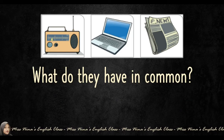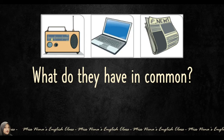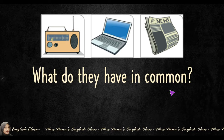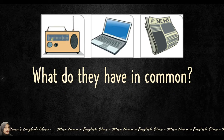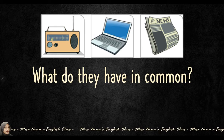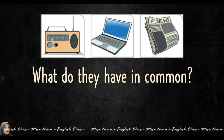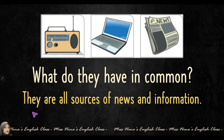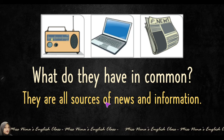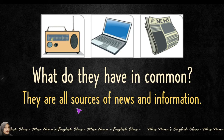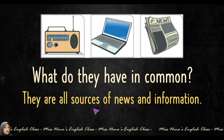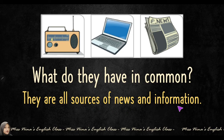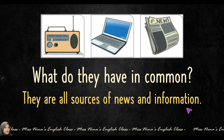Which brings us to question number one: what do they have in common? Apakah persamaan ketiga-tiga item ini? The answer is they are all sources of news and information. Sources — sumber. News — berita. Information — maklumat.